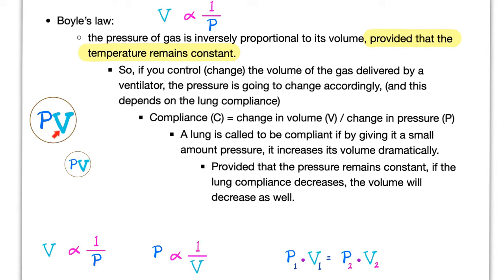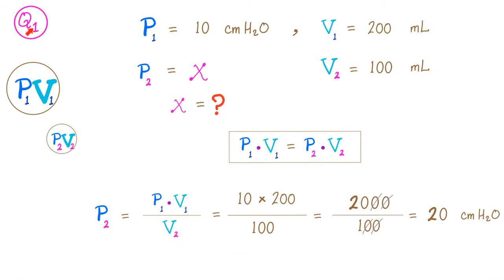Question: Bubble one has pressure 10 and volume 200. Bubble two has volume 100. What is the pressure? Using Boyle's law: P1 × V1 = P2 × V2. So P2 = P1 × V1 / V2 = 10 × 200 / 100 = 20. The pressure in the second bubble is 20 — greater than the first because the volume is smaller. It's an inverse relation.